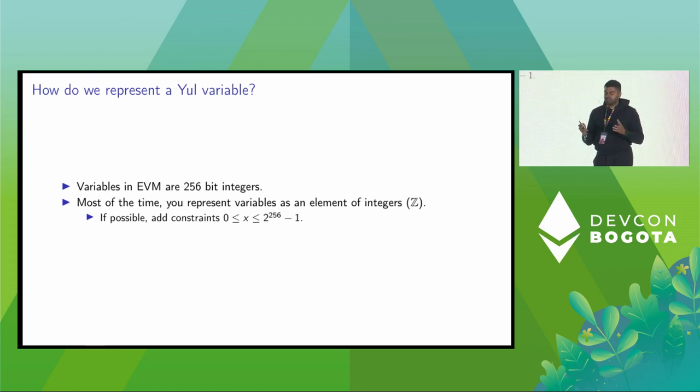EVM, on the other hand, is too simple, and we have to extract a lot of information about the control flow and encode it. So maybe let's ignore Solidity and EVM for encoding and just deal with Yule. It's in the right middle ground. It's simple enough and has enough information about the control flow.